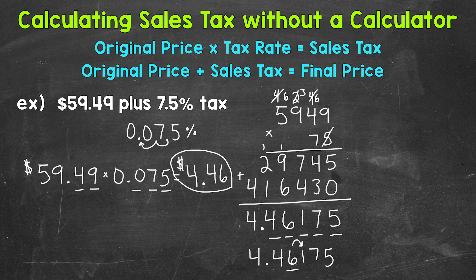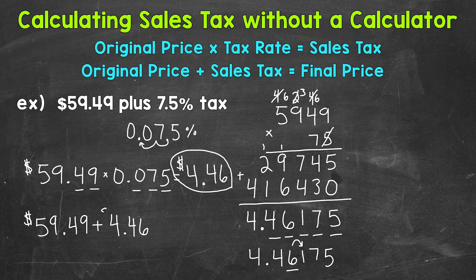Once we have that information, we take the original price and add that sales tax, and that's going to give us our final price — the total cost. So we need to add our price of $59.49 and our sales tax of $4.46, and that will give us our final price, the total cost.